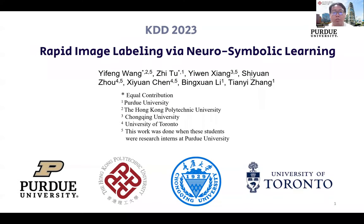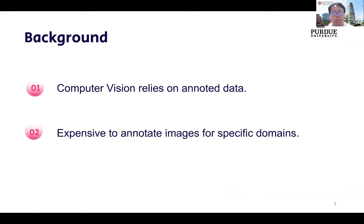Hi, I'm Yifeng Baung, author of Rapid Image Labeling via Neuro-symbolic Learning. The success of computer vision relies heavily on annotated data. However, it is prohibitively expensive to annotate images in key domains, such as healthcare, where data labeling requires significant domain expertise and cannot be easily delegated to cloud workers.